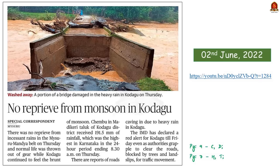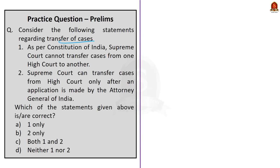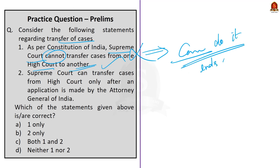Now let's move to the preliminary practice question discussion, which is regarding the transfer of cases. Two statements are given. Statement 1 is incorrect because as per Article 139A of the Constitution, the Supreme Court may transfer any case, appeal, or other proceedings pending before any High Court to any other High Court if it deems fit for the ends of justice — since 'cannot' is given in the statement, it is incorrect. Statement 2 is also incorrect.